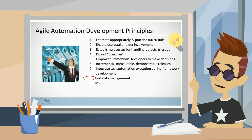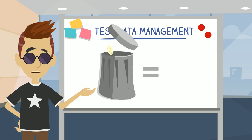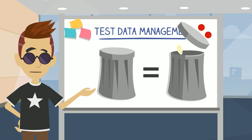Your testing is not going to be any good unless you've got good test data, so it's a very critical part of test automation. It's a GIGO situation — garbage in, garbage out.